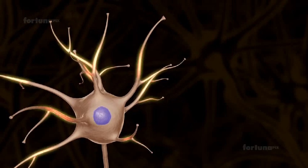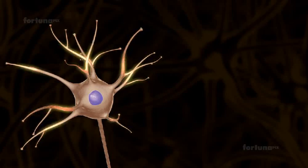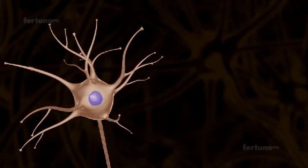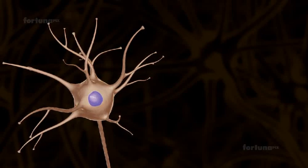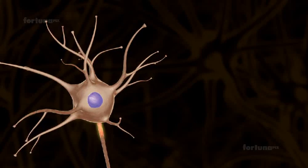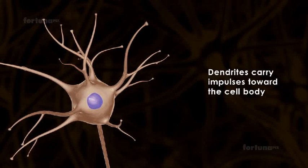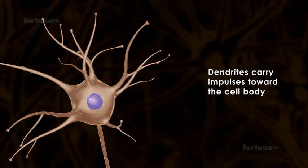Extending from the cell body are several short branched extensions known as dendrites. These receive the neural impulses from receptors or from adjoining neurons, which allows them to communicate with nearby cells. It is only dendrites which carry impulses toward the cell body.